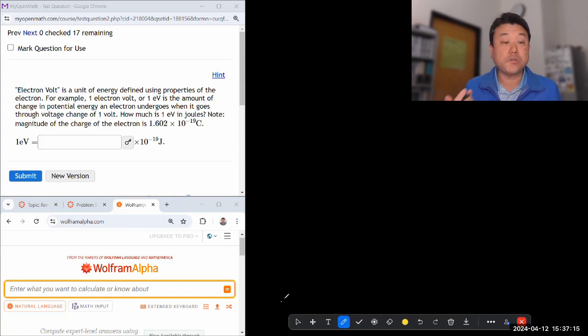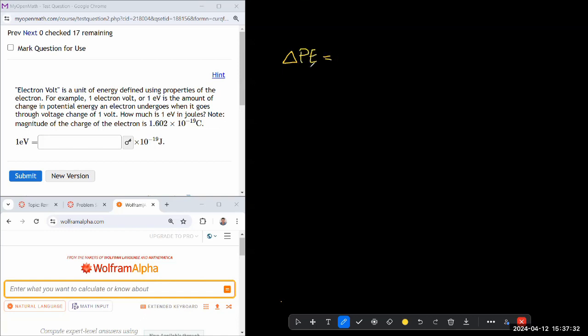This question says electron volt is a unit of energy defined using properties of the electron. For example, one electron volt or one EV is the amount of change in potential energy that an electron undergoes when it goes through a voltage change of one volt. So here you kind of have to start remembering some of the things you learned in physics 4b.